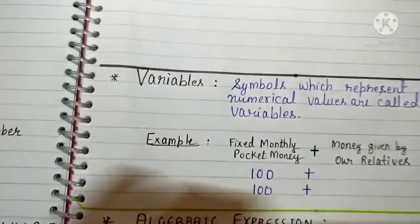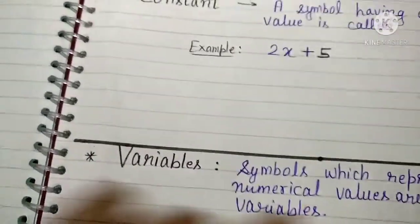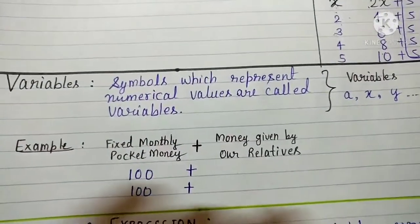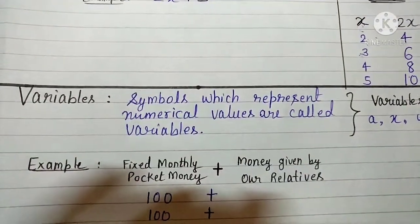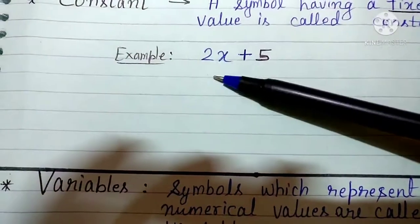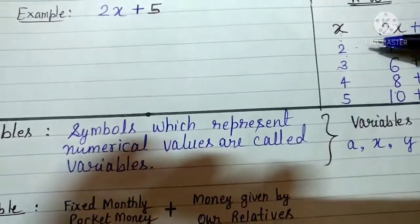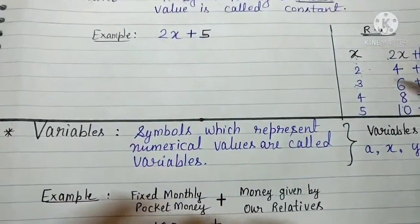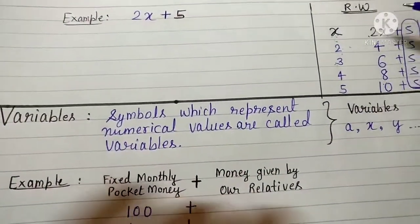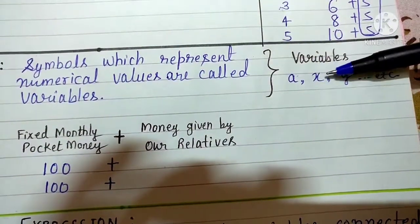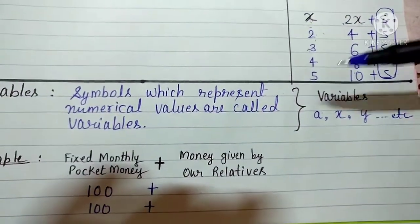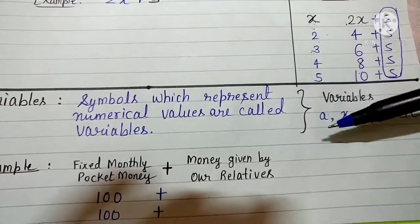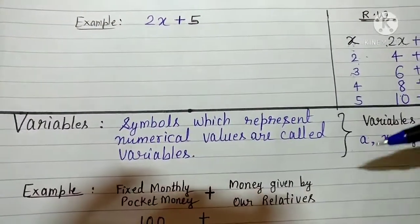Now move to the second term: variables. As we have seen, this variable x keeps changing. Symbols which represent numerical values are called variables. We used x to represent numerical values — sometimes it can be 2, sometimes 3, and so on. The symbols we use are alphabets like A, X, Y, Z, M — any alphabet can be used for variables because the value is changeable.